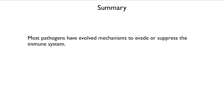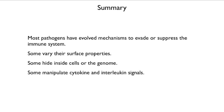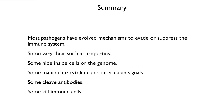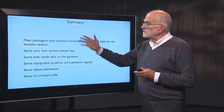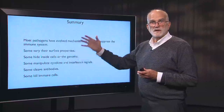To summarize: most pathogens have evolved mechanisms that either evade or suppress the immune system. Some vary their surface properties, some hide inside cells, some manipulate signals, some cleave antibodies, and some actually kill immune cells. Given that array of weapons pathogens have developed to deal with vertebrate immune systems, it is a wonder that we do so well in fighting them off. The vertebrate immune system is flexible and powerful enough that eventually it can deal with all of these properties, if the patient can just stay alive long enough.